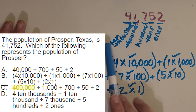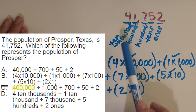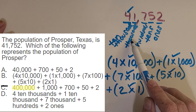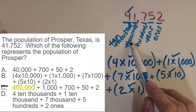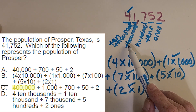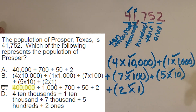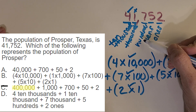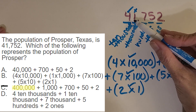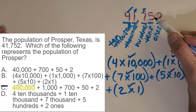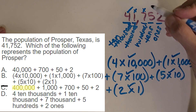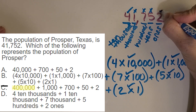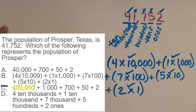So choice D says there are four 10,000s — is that true? Yes. Does it say one 1,000? Oh, very tricky — it says 1,000 but wait, is there really one 1,000? No. And does it say seven hundreds? It says 7,000 — but we know there's not a seven in the thousands place, so that can't be right. Does it say five tens? No, it says five hundreds. This one has more mistakes than the others. And two ones — that one is true, but these three are wrong. So we're going to go with choice B.